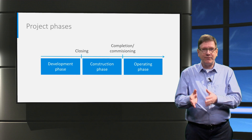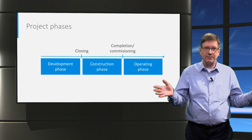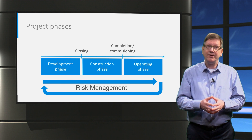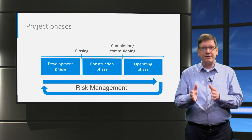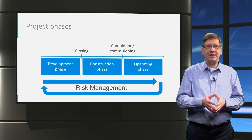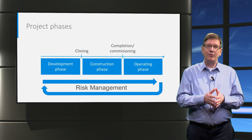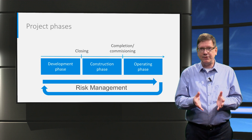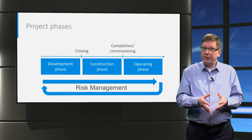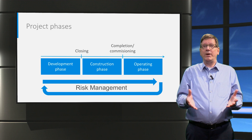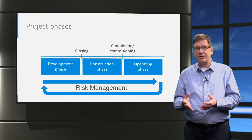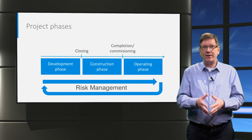Risks can occur at different moments and in all these phases. Risk management is therefore a dynamic process that needs to take place across all project phases, meaning it needs to be repeated from time to time. Risks and possible risk mitigations will change as the project progresses. For example, construction risks will have fallen away once construction is completed, and there may be new insights and technical developments that can be taken on board when they occur.